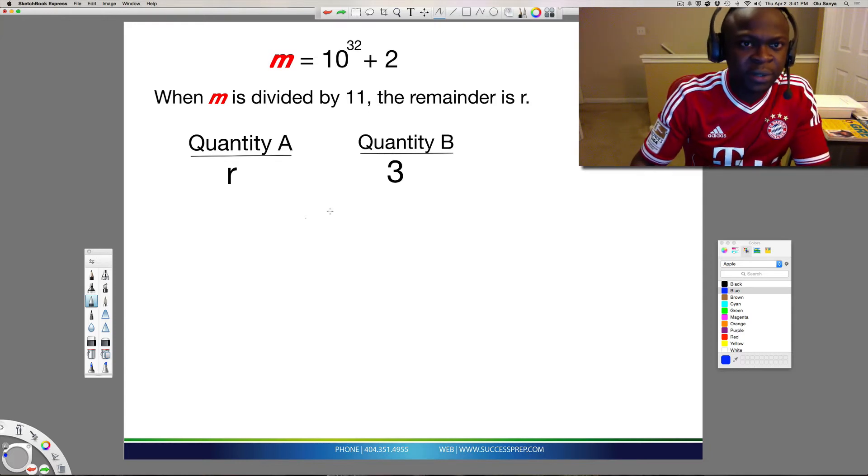All right, for this GRE question, we're told that M is 10 to the 32 plus 2, and we're told in the question that M is divided by 11, and they're telling us that that remainder is R.